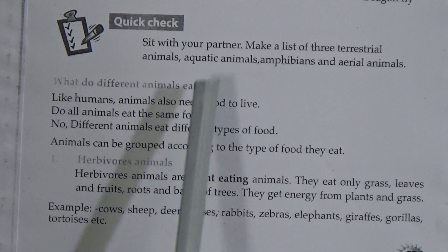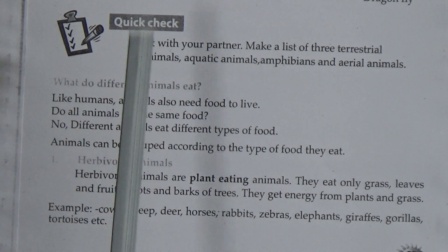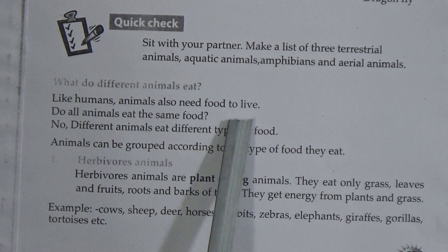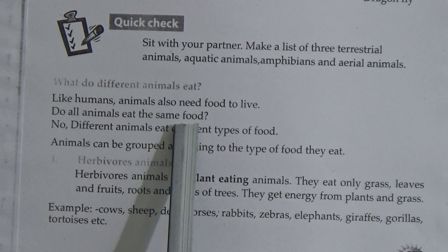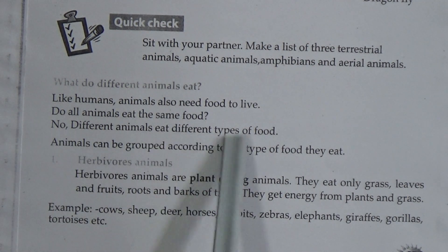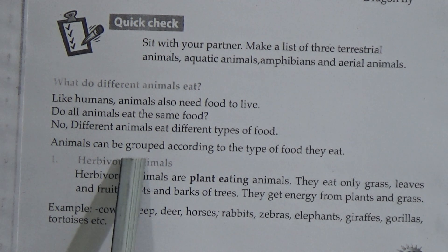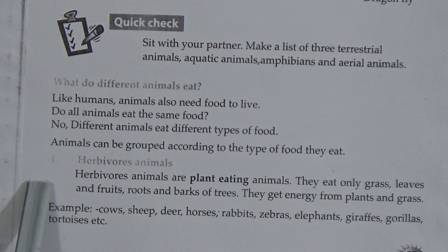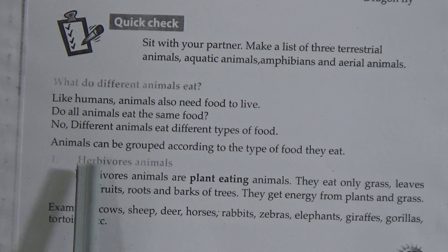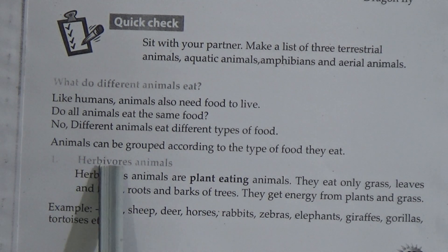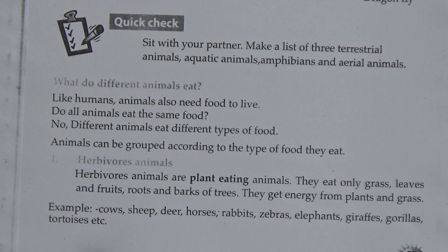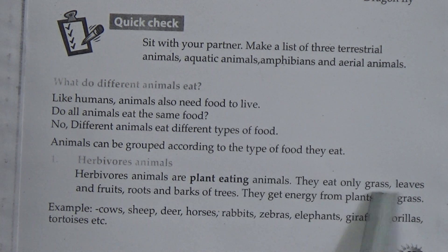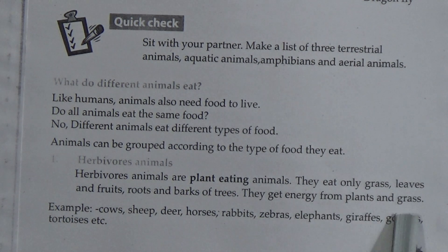What do different animals eat? Like humans, animals also need food to live. Different animals eat different types of food. Animals can be grouped according to the type of food they eat. Number one here is herbivores. Herbivores spelling is H-E-R-B-I-V-O-R-E-S. Herbivores animals are plant eating animals. They eat only grass, leaves, fruits, roots and bark of trees. They get energy from plants and grass.